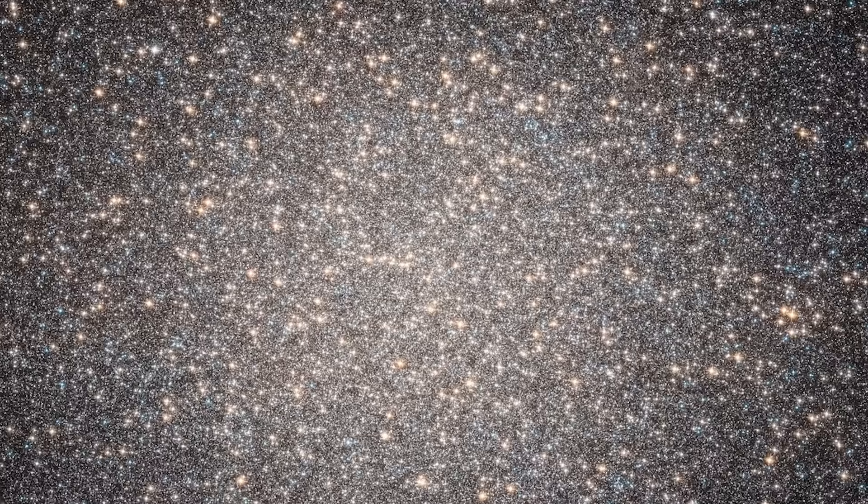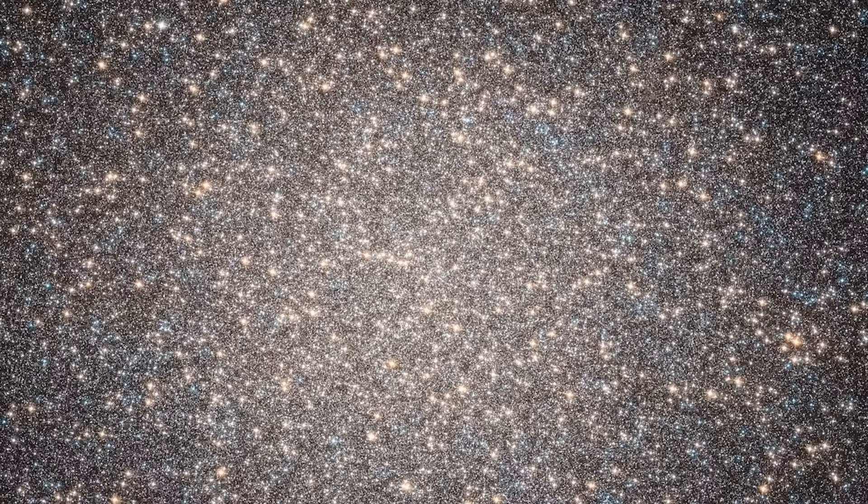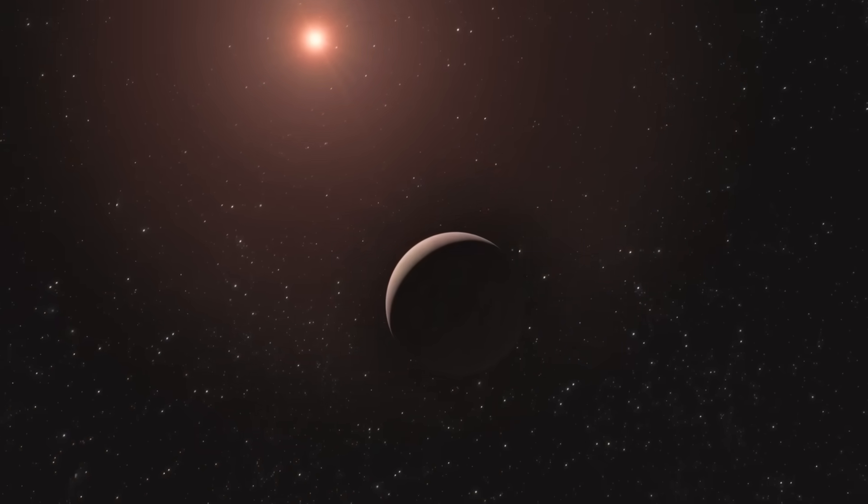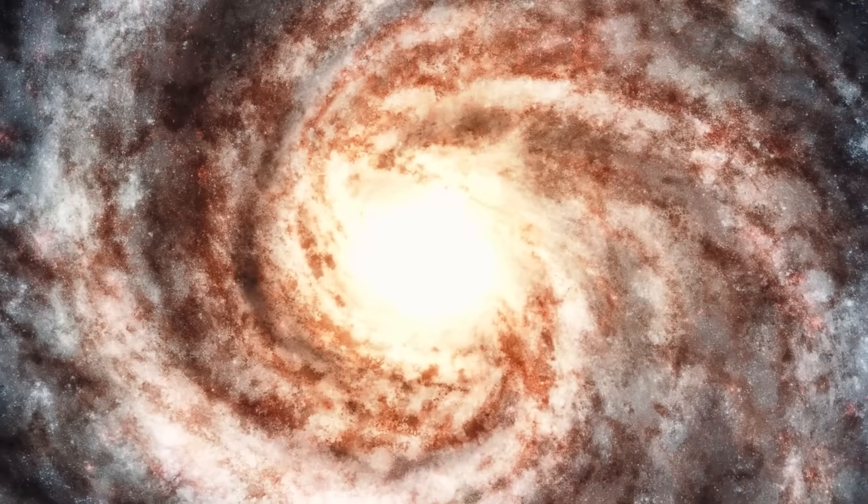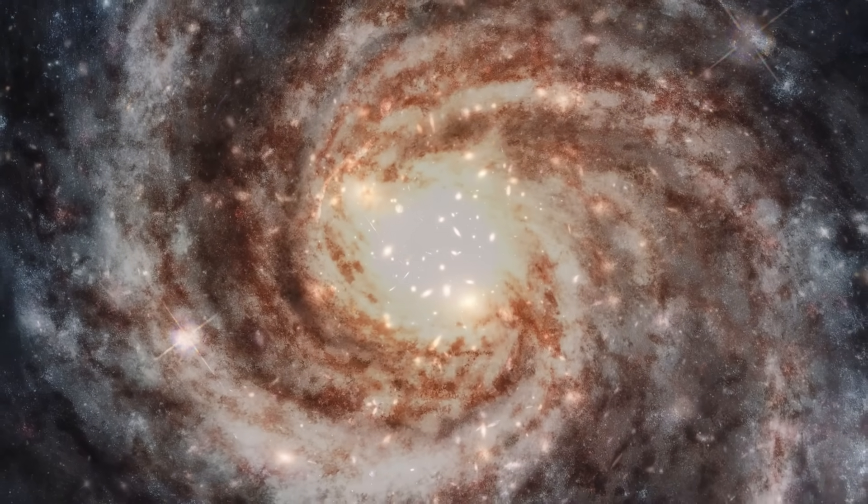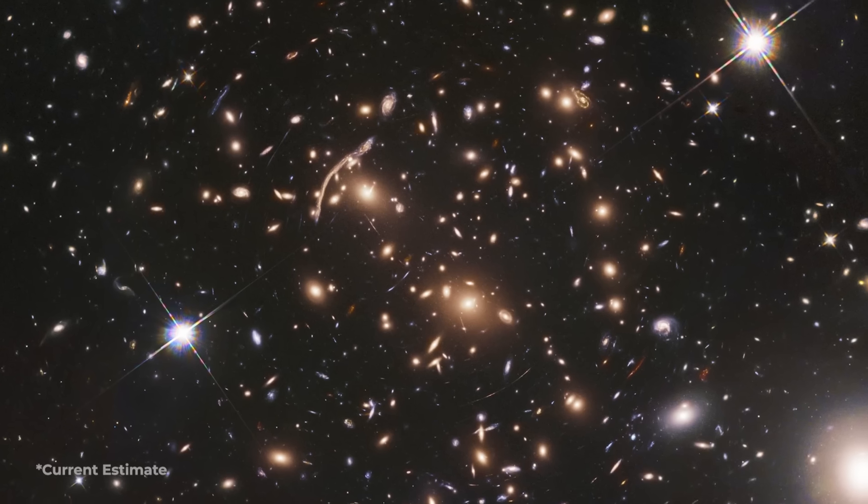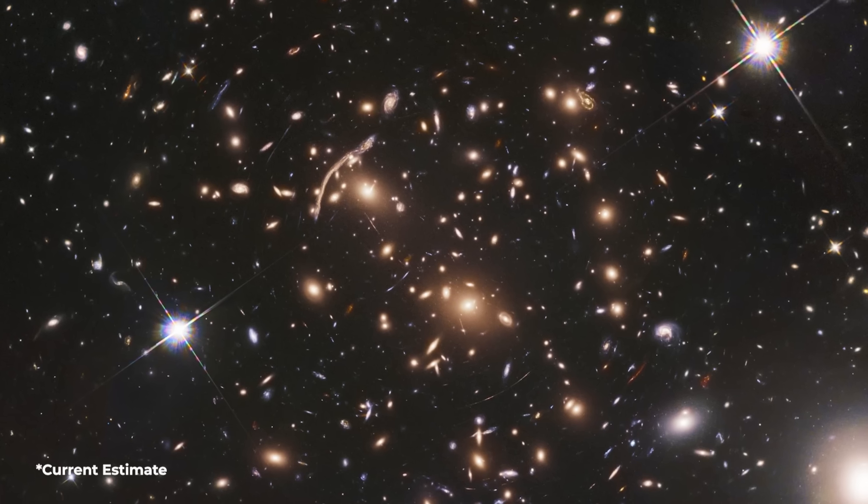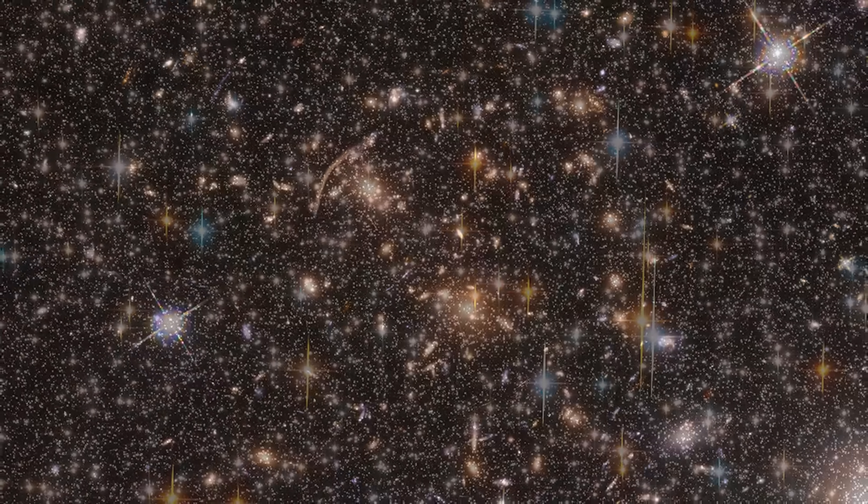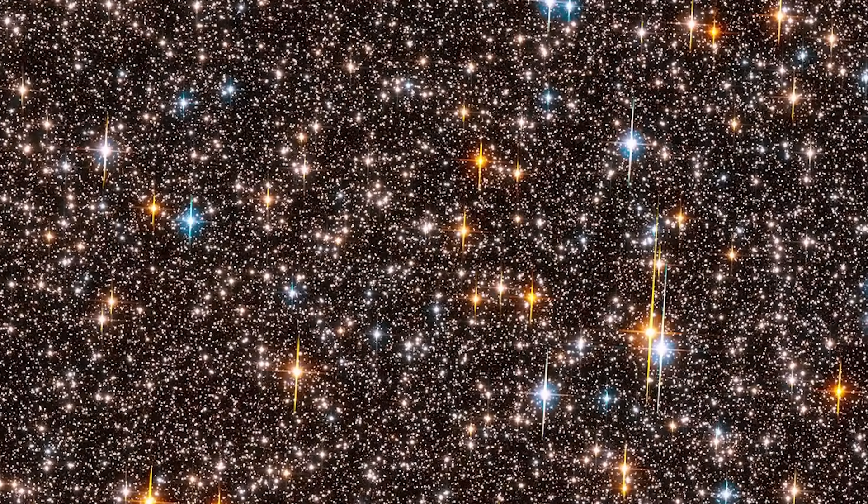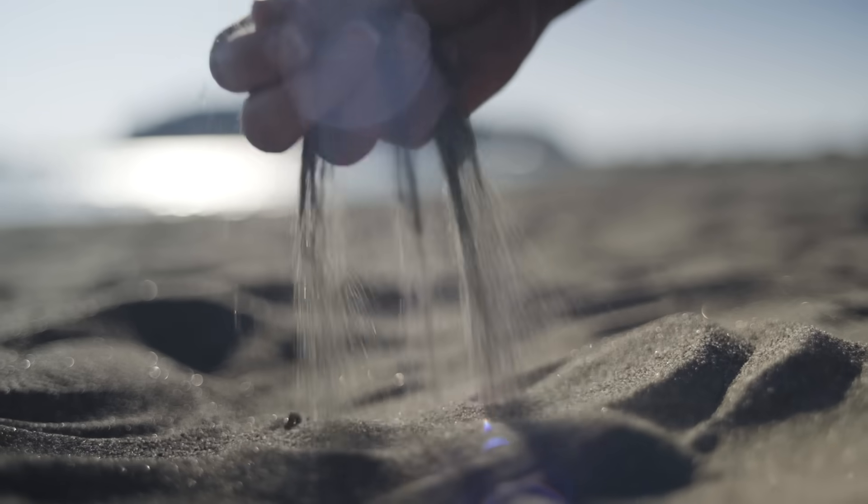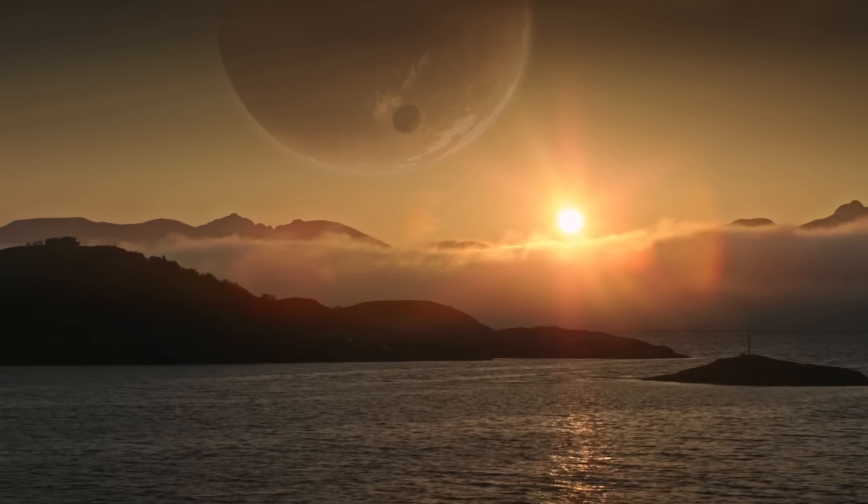There are at least 100 to 400 billion stars in our galaxy. Imagine if each star had just one planet. That means there could be up to 400 billion planets in the Milky Way alone. Now think about this. The universe has around 2 trillion galaxies, which means the number of stars out there is incredibly huge. Some estimates even suggest there are more stars in the universe than grains of sand on all of Earth's beaches. That could mean just as many planets.